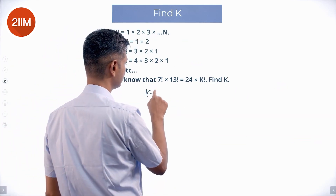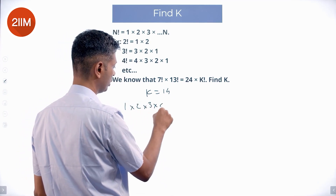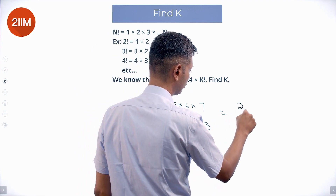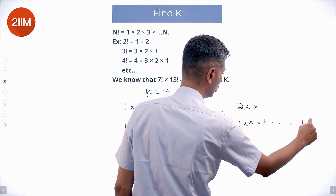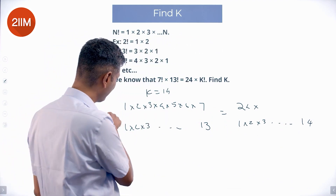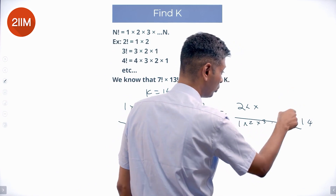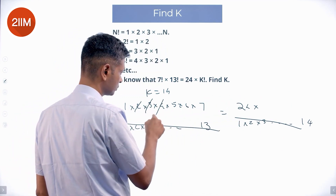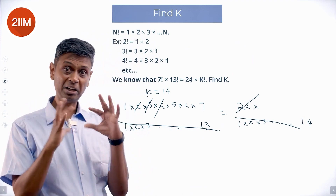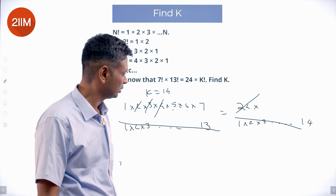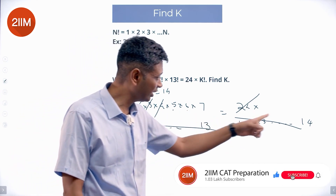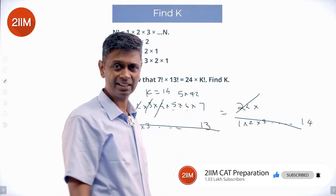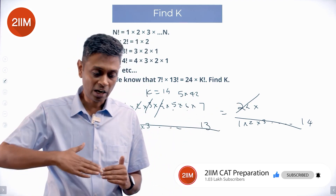I will put k equal to 14. On the left: 1 × 2 × 3 × 4 × 5 × 6 × 7 times 1 × 2 × 3 all the way to 13. On the right: 24 × 1 × 2 × 3 all the way to 14. Everything up to 13 cancels. What remains on the left is 1 × 2 × 3 × 4 × 5 × 6 × 7, and on the right 14 appears. But 14 itself contains 2 × 3 × 4 = 24, which cancels, leaving 5 × 6 × 7 on the left and nothing extra on the right — 6 × 7 is 42, so we have 5 × 42 still remaining. Even k equal to 14 doesn't work; I have to go higher.